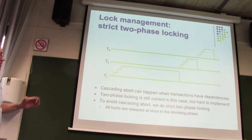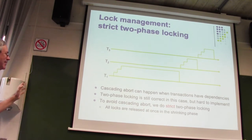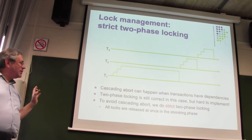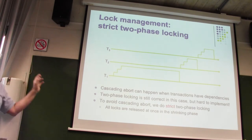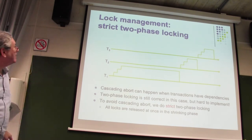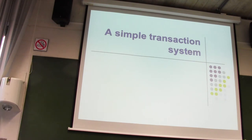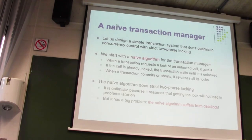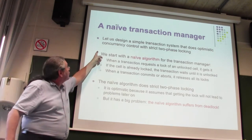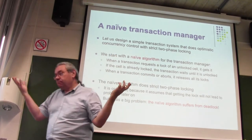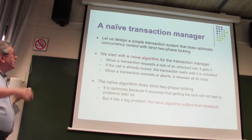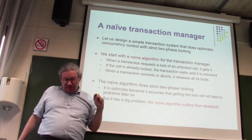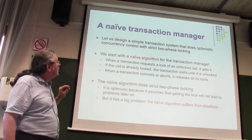So it seems we're almost done — we have optimistic concurrency control with strict two-phase locking. But as was mentioned, there's still the deadlock problem hanging over us. Let me now make a simple naive transaction system using strict two-phase locking. Here's the algorithm — I call it the naive algorithm. It's very simple.